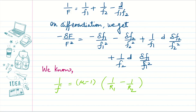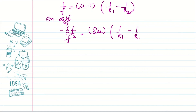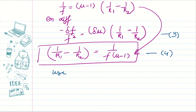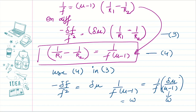We know the relation between focal length and refractive index: 1/f = (μ-1)(1/R1 - 1/R2). Differentiating this gives -δf/f² = δμ·(1/R1 - 1/R2). We can write (1/R1 - 1/R2) = 1/(f(μ-1)) from the lensmaker's equation. Substituting, we get -δf/f² = δμ/(f(μ-1)) = (1/f)·[δμ/(μ-1)]. Since δμ/(μ-1) is the dispersive power ω, this simplifies to δf/f² = ω/f.